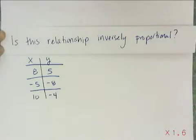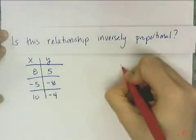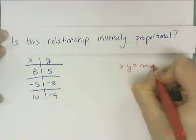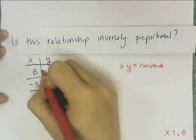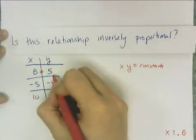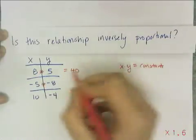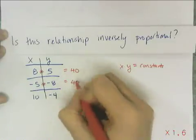Let's determine if the data points in the table form an inversely proportional relationship or an inverse variation. Remember, for inverse variation, x times y must be constant. So I'm going to test by multiplying the x values times the y values. So 8 times 5 is 40, and negative 5 times negative 8 is also 40.